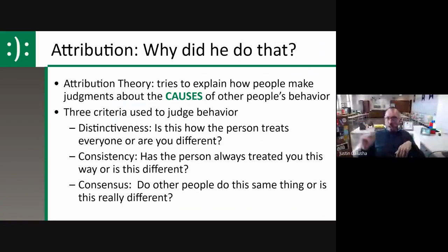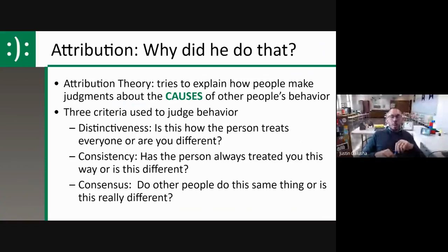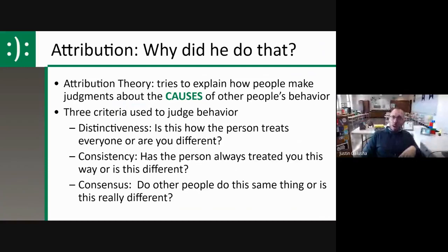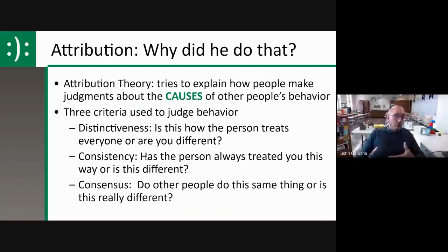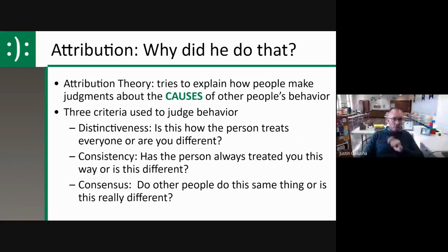Consistency is whether the person has always said hi to me and now they just aren't, or if they've just never said hi. Consensus - here at our school we have about 2,000 students and we don't always say hi to each other in the halls - that's the consensus. But if you ran down the hallway saying hi to every single person, people would try to attribute why you were doing that. Distinctiveness applies if I said hello to every other student but looked at you and moved on.